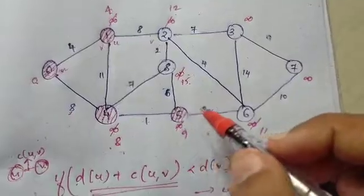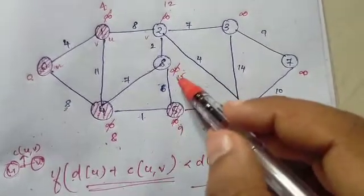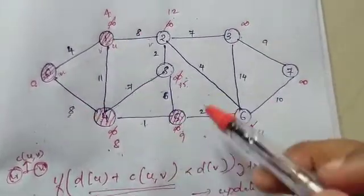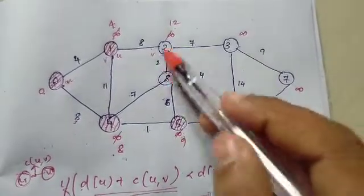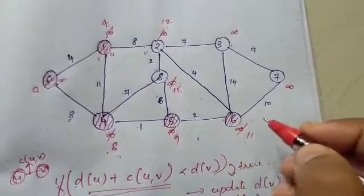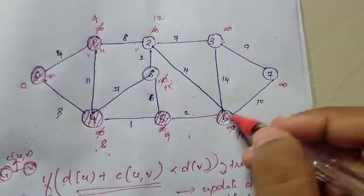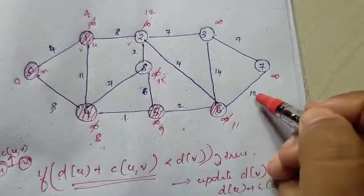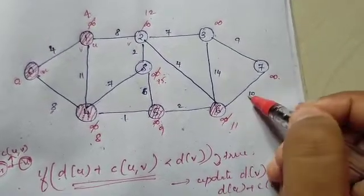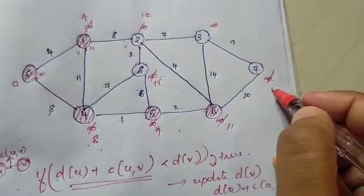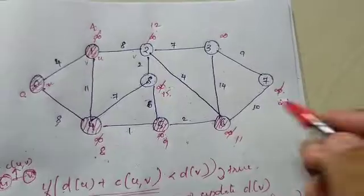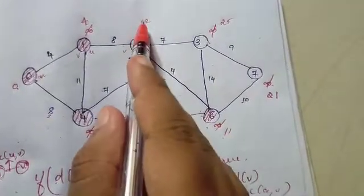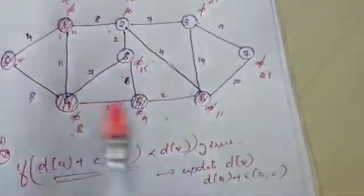We need to select the next minimum. Current distances: 12, 15, 11, infinity. We select 11 — that is vertex 6. Vertex 6 is connected to vertices 7, 3, and 2. Check: 11 plus 10 is 21, less than infinity — update. 11 plus 14 is 25, less than infinity — update to 25. 11 plus 4 is 15, and 15 is less than the current d(v) of 12... so we check and update d(v).